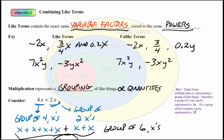Well, the powers tell us how many of those factors we have. So if we look at some examples of like terms, here I have negative 2x, the variable factor is just x. 3 fourths times x, well, the variable factor is x. And then 0.2 times x. These are all like terms. It doesn't matter what the coefficients are. These are like terms.